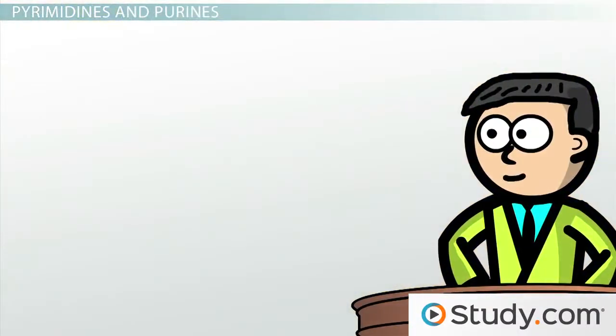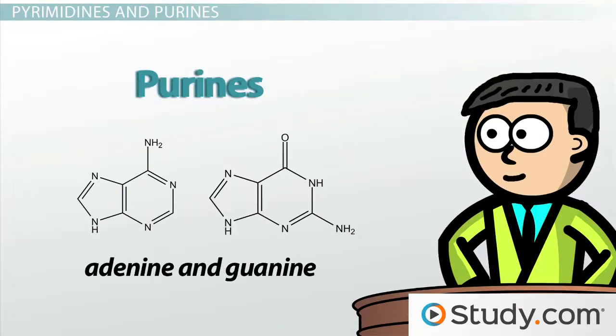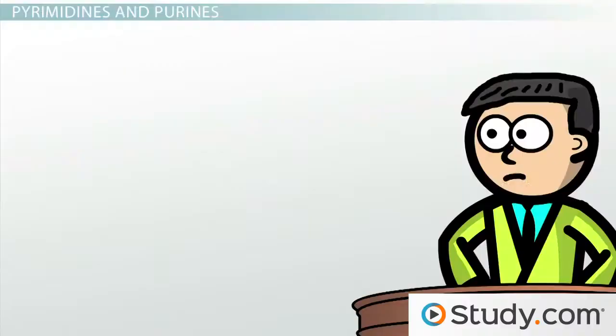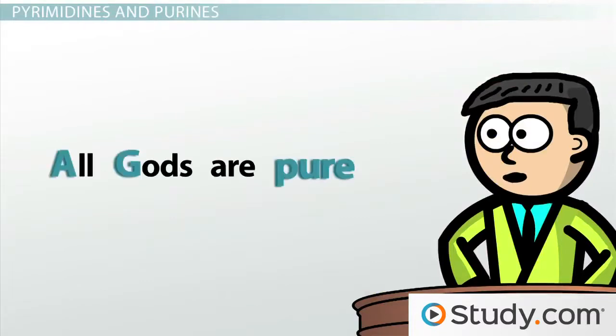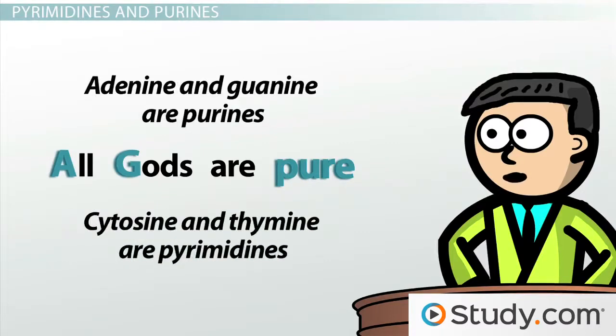The bases can be categorized into two different groups. The single-ring nitrogenous bases, thymine and cytosine, are called pyrimidines. And the double-ring bases, adenine and guanine, are called purines. You might wonder how I can remember that, but it's really quite simple. All AGs are pure: adenine and guanine are purines. And by process of elimination, that means cytosine and thymine have to be pyrimidines.